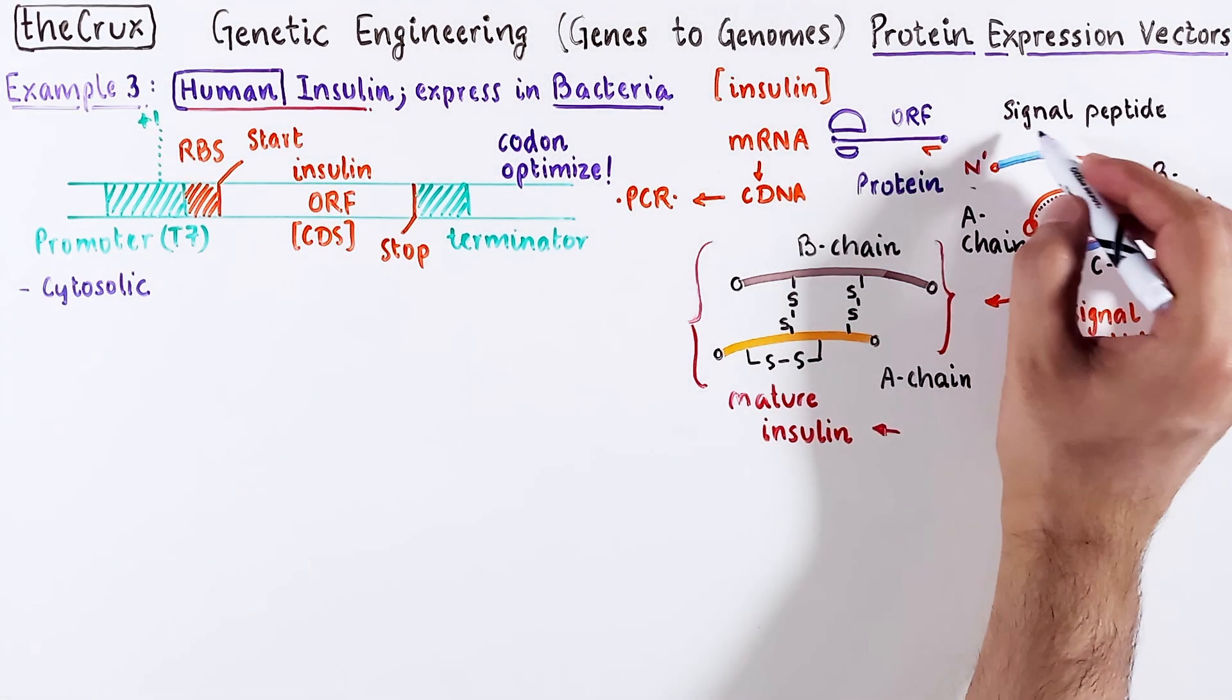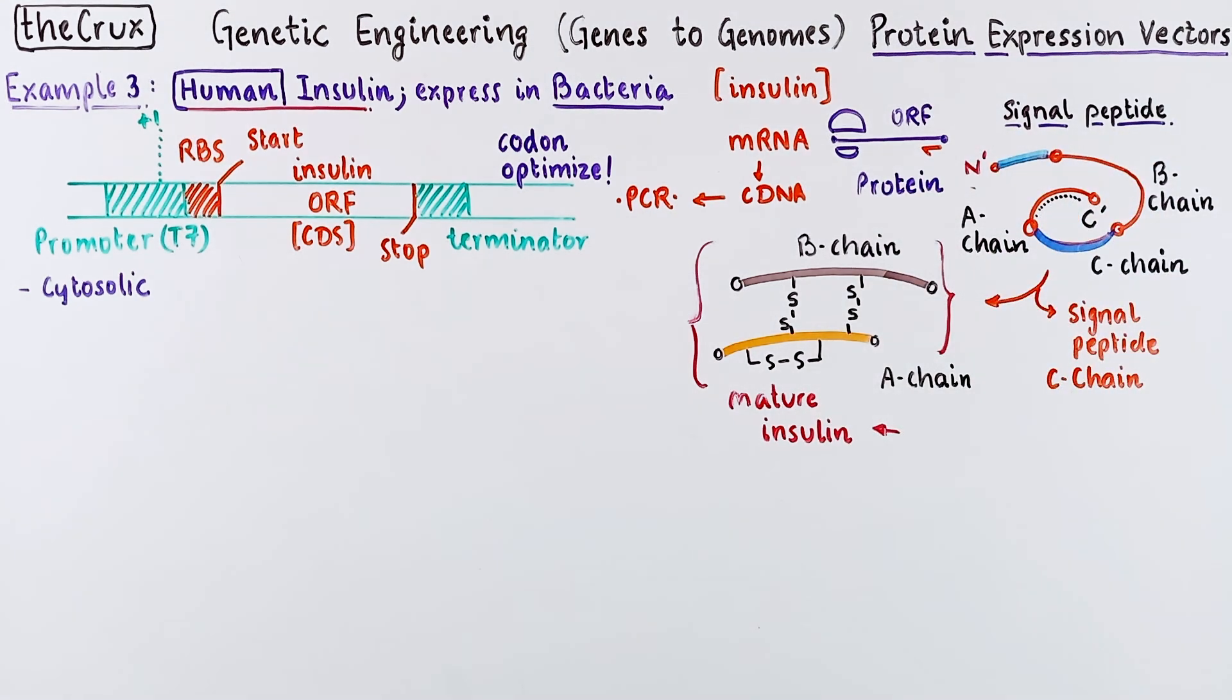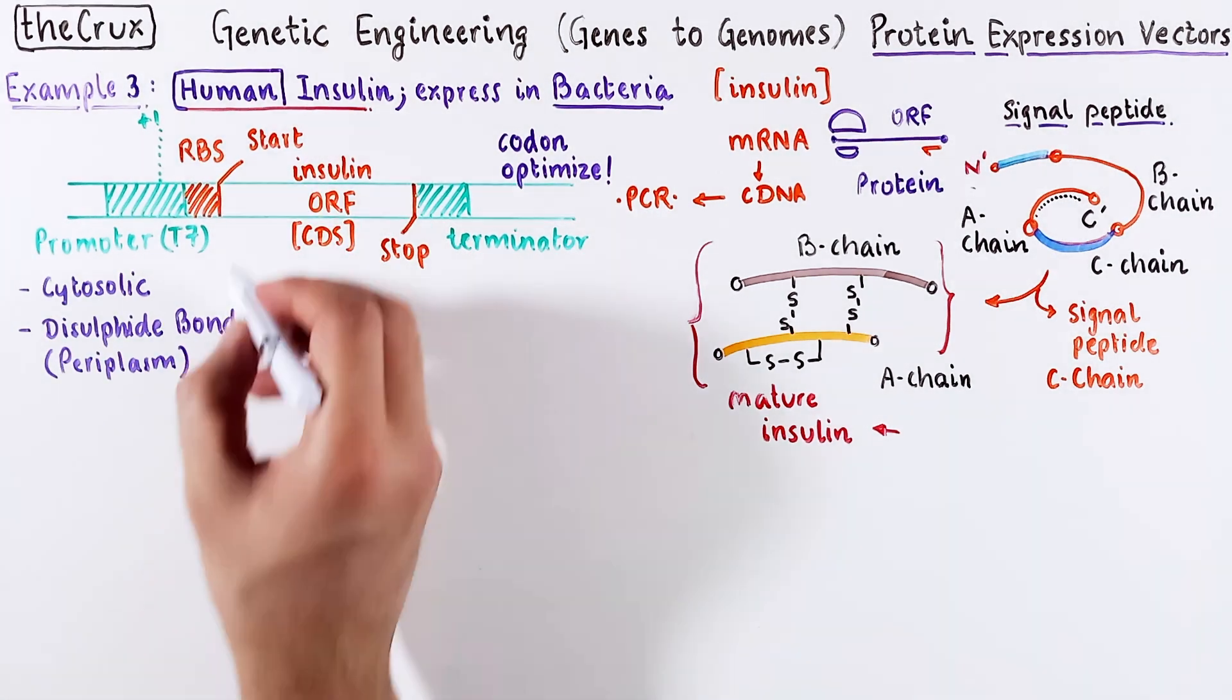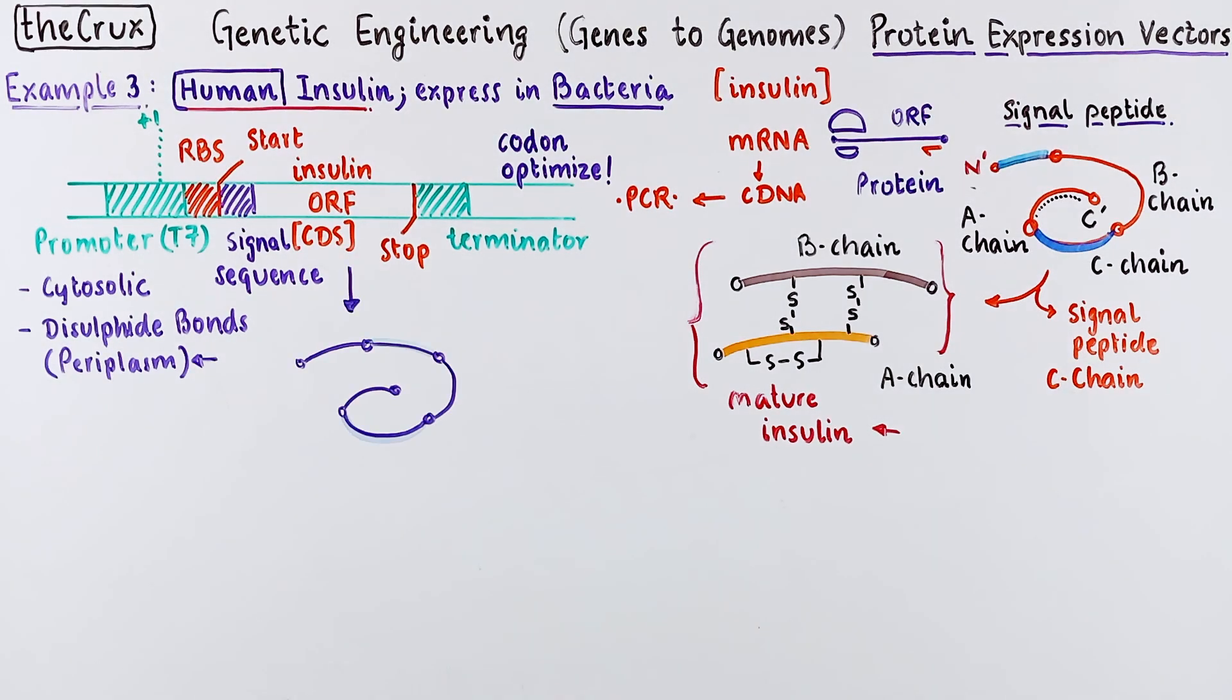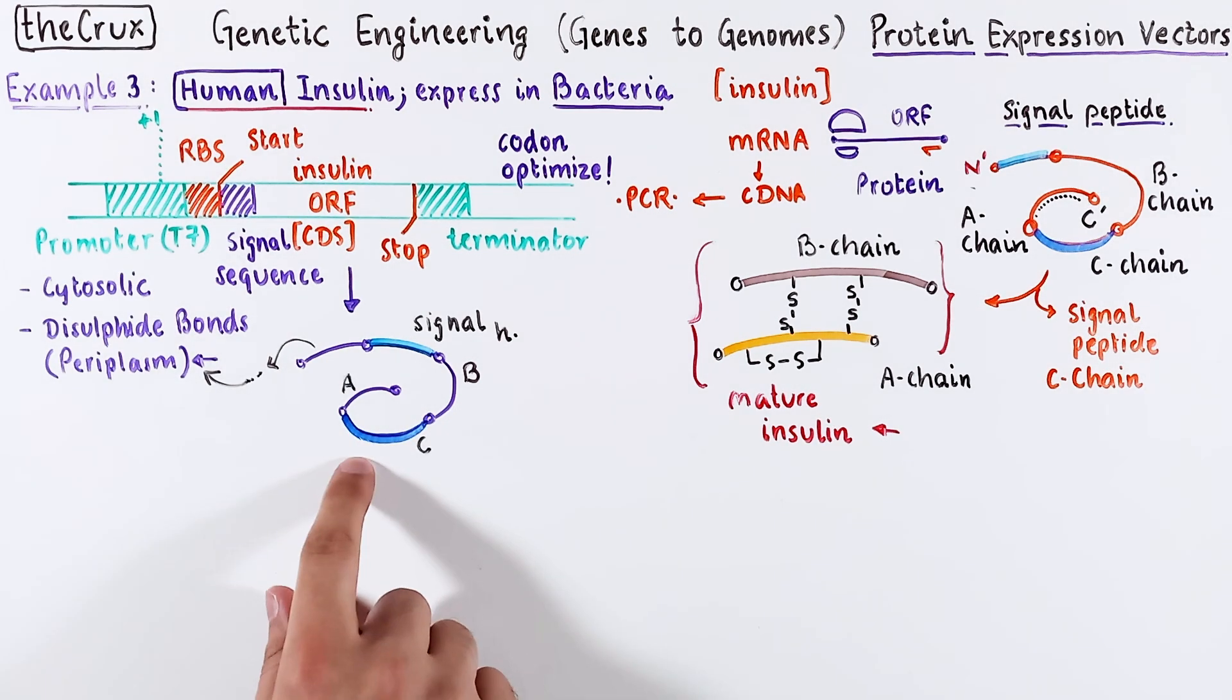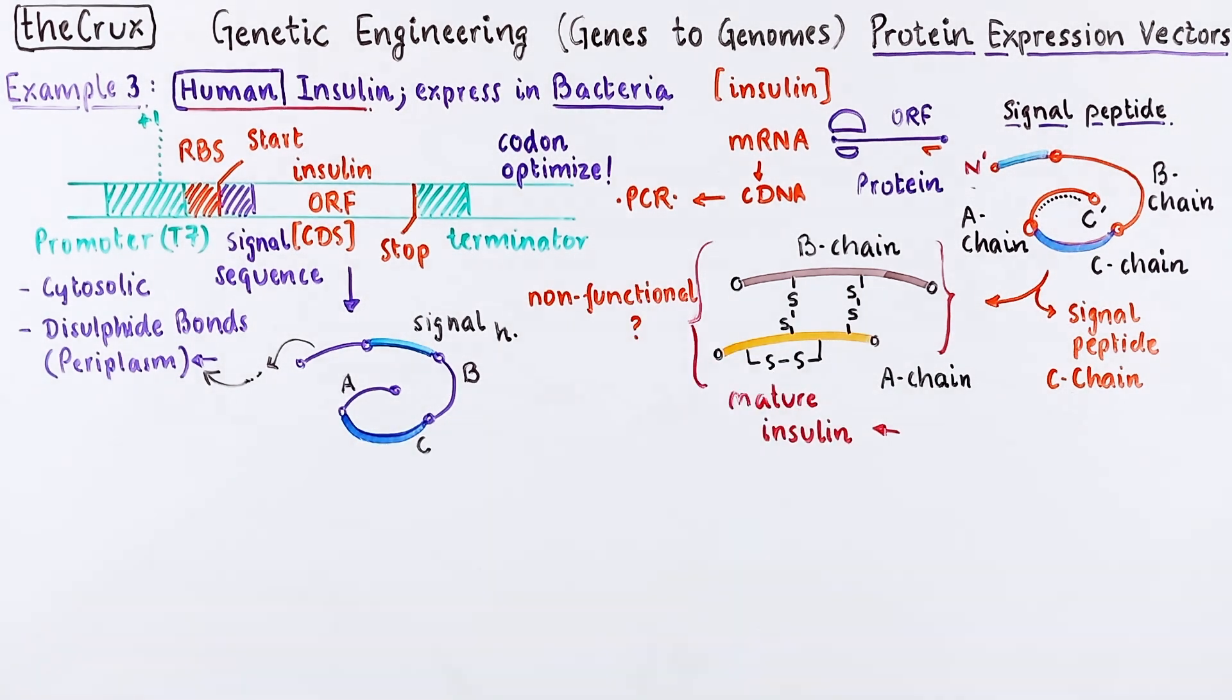The immature insulin has a signal peptide for translocation to endoplasmic reticulum where disulfide bonds are made. To make disulfide bonds in bacteria, you want this protein to end up in the periplasmic space. So, you add a signal to the ORF. The final protein from this will have 3 chains: the human signal peptide and the periplasmic signal. Unfortunately, this insulin protein is going to be non-functional. Well, why is that?